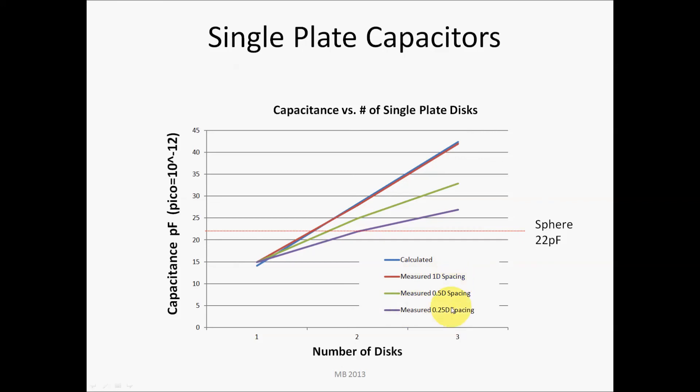I have the different diameter spacing, so once you have one diameter of spacing, there's no longer a cancelling effect with the fields around the discs. This is the values for 0.5 diameter spacing and 0.25 diameter spacing. And then this red line here is the 22 picofarads that just having a conductive sphere would achieve.